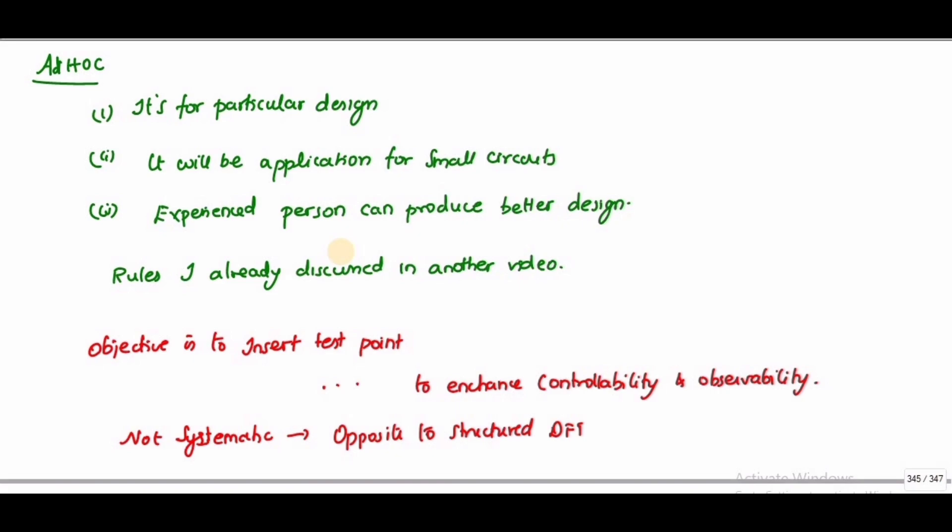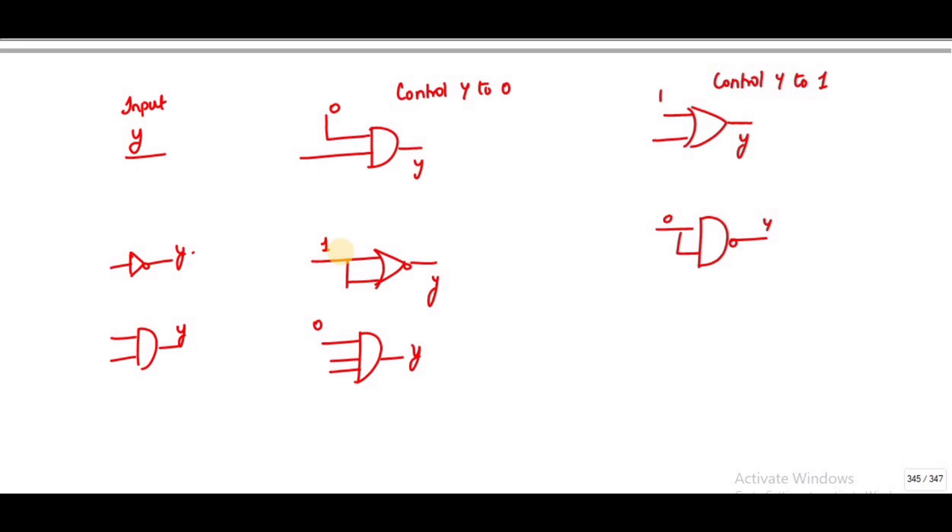We are considering the testability of the design, so two properties are of foremost importance: controllability and observability. Controllability measures the ease of bringing a circuit node to a given condition using only the input pins. I have chosen a node y which is easily controllable - it can be brought to any condition, 0 or 1, by connecting an AND gate. If one input is 0, y can be easily controlled to 0.